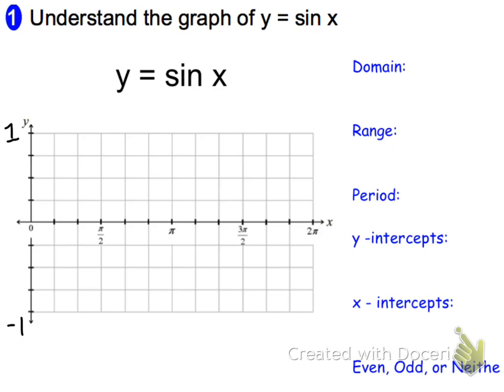So the first angle we're at is 0 and the sine of 0, meaning the y value at 0 is 0. If we go on to π over 2, the sine of π over 2 is 1, so we'll go up here to 1.